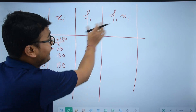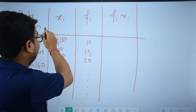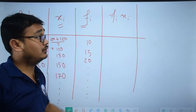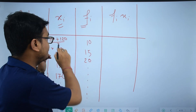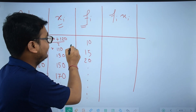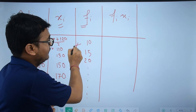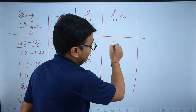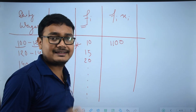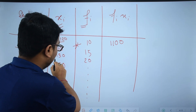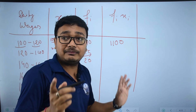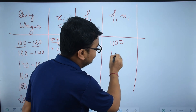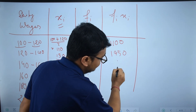Now calculating fi·xi: 110 × 10 = 1100. Next, 130 × 15 = 1950. Continuing with the multiplications for the remaining class intervals.